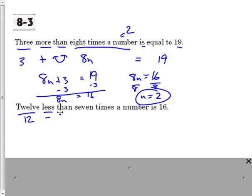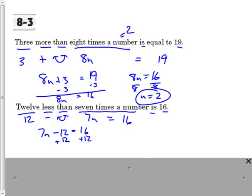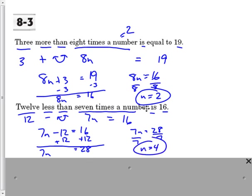"12 less than 7 times the number is 16" — that's the flip-it sign. So 7 times the number is 7n equals 16. Now I do have a flip-it sign in there, so let's rewrite it: 7n minus 12 equals 16. Then we can add 12 on both sides, we get 7n equal to 28. Divide by 7 on both sides, n is 4. So the number they're referring to there is 4.